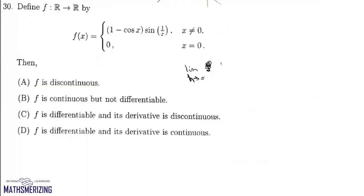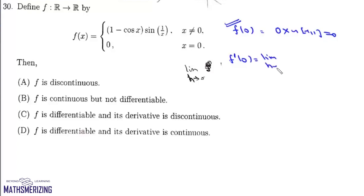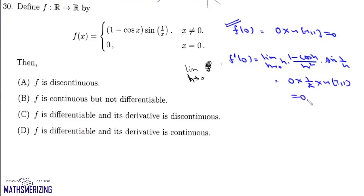Question 30: we have to find continuity, differentiability, and continuity of the derivative. f(0) = (1 − cos 0)·sin(1/0) — using the limit, this is 0·oscillating → 0, so f is continuous at x = 0. For f'(0): limit h→0 of [(1 − cos h)/h]·sin(1/h) = 0·(1/2)·oscillating = 0. So the function is both continuous and differentiable on ℝ.